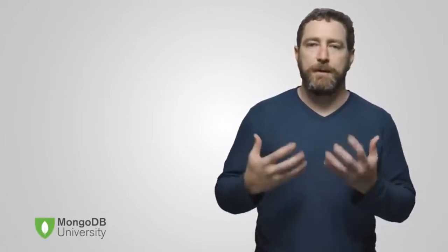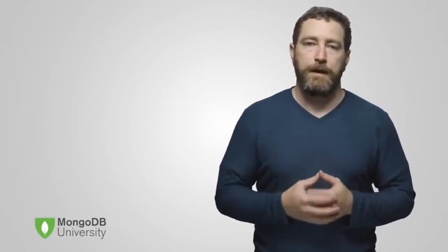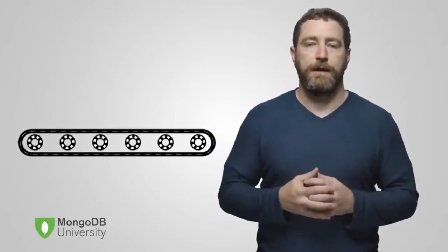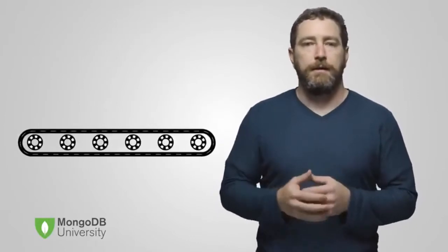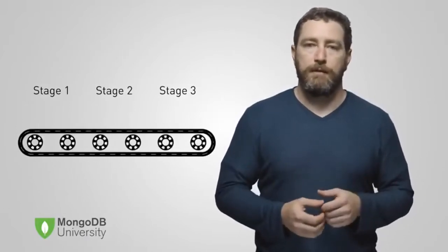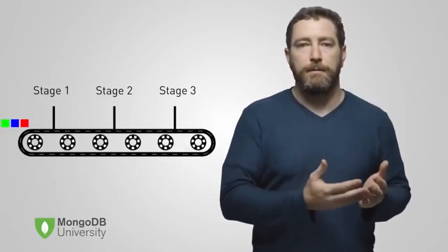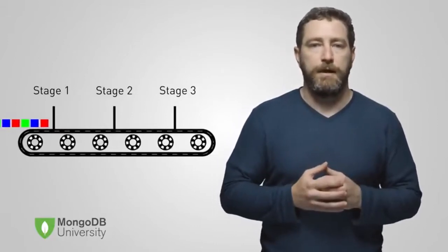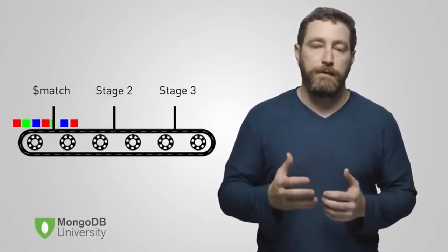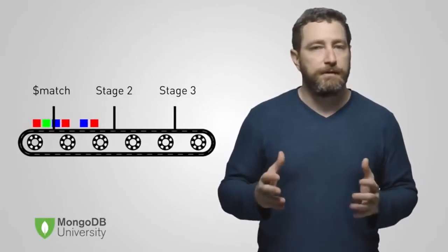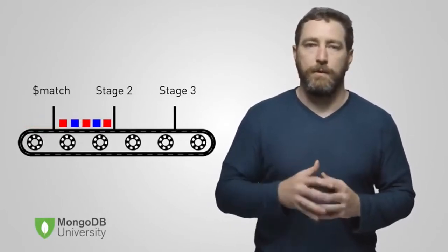Pipelines — you'll hear us mention pipelines quite a bit throughout the course, so let's take a few minutes to discuss what they are. Pipelines can be thought of as a conveyor belt in a factory. Along the line, there are different assembly stations. These assembly stations are stages. Depending on what we want to accomplish, we may have only one stage or we may have many stages. Documents enter our pipeline and begin to flow into our first stage. This stage is called match, which you'll be introduced to very soon. We've set this stage up so that only red and blue squares make it through.